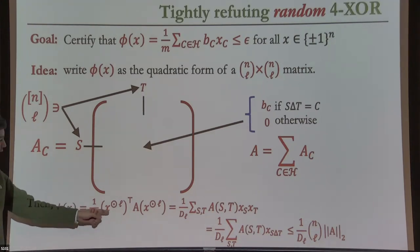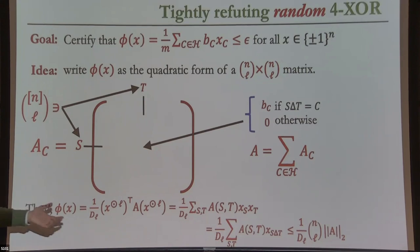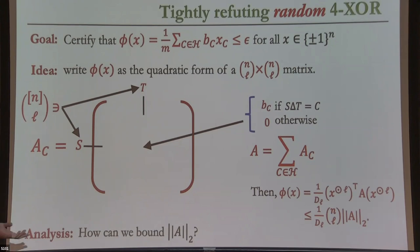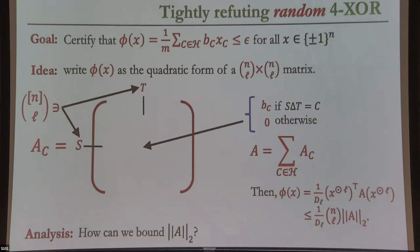Applying the same trick once I've written phi(X) as a quadratic form: the squared L2-norm of the X^{⊗L} vector is N-choose-L, so I reduce to bounding the spectral norm of this huge matrix A. For random 4XOR, the key thing is that the matrices A_C are independent random matrices — the source of randomness is the right-hand sides b, which are independent. So I can still apply matrix Bernstein. That's the proof: compute what matrix Bernstein gives and the trade-off turns out to require M ≥ N^2/L.